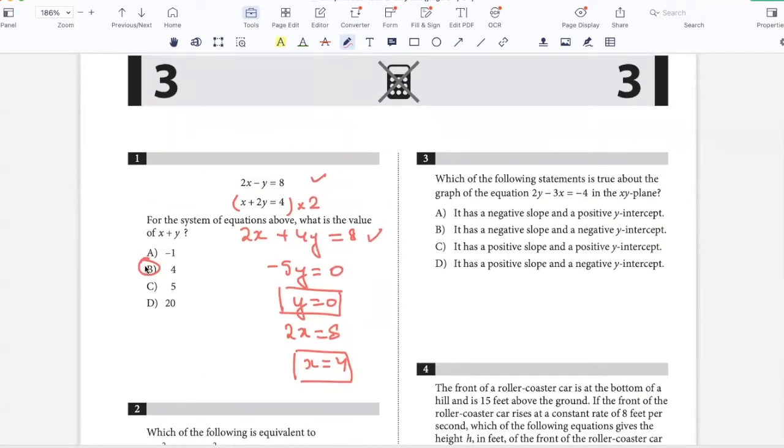Which of the following statements is true about the graph of this equation? I have to comment on the slope and the y-intercept. So 2y equals 3x minus 4, therefore y equals 3 by 2x minus 2. So the slope is 3 by 2 and the y-intercept is negative 2. This has a positive slope and negative y-intercept. Option D.